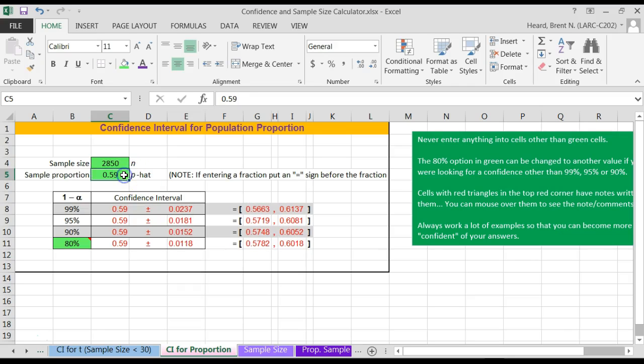Then the sample proportion, well it was a fraction here, so when I enter a fraction I type equals. What was it? 1,567 divided by 2,850. Let Excel do the work. So I type equals 1,567 divided by 2,850. Hit the enter button. BAM!